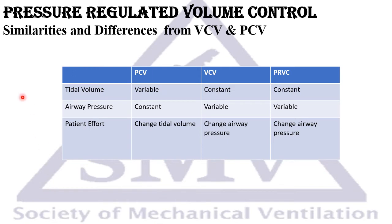Looking at similarities and differences: in pressure control, tidal volume is variable according to compliance, resistance, auto-PEEP, and patient effort. In volume control, tidal volume is constant and airway pressure is variable. In pressure regulated volume control, tidal volume is similarly kept constant and airway pressure is variable — so it is similar to volume control in that respect.